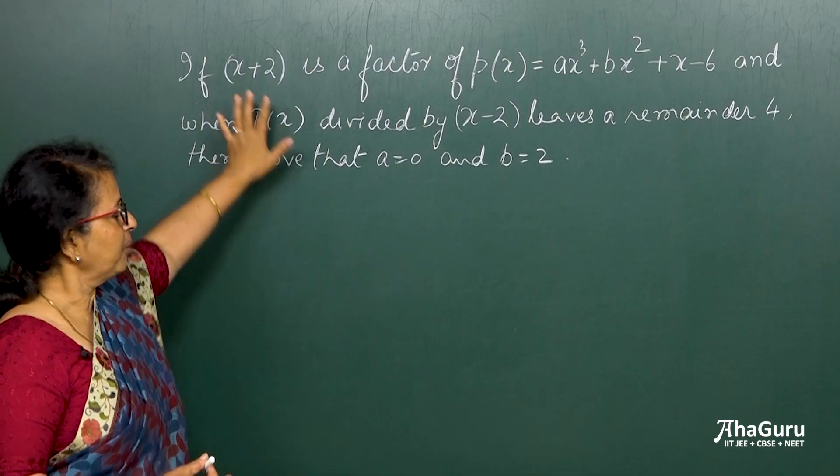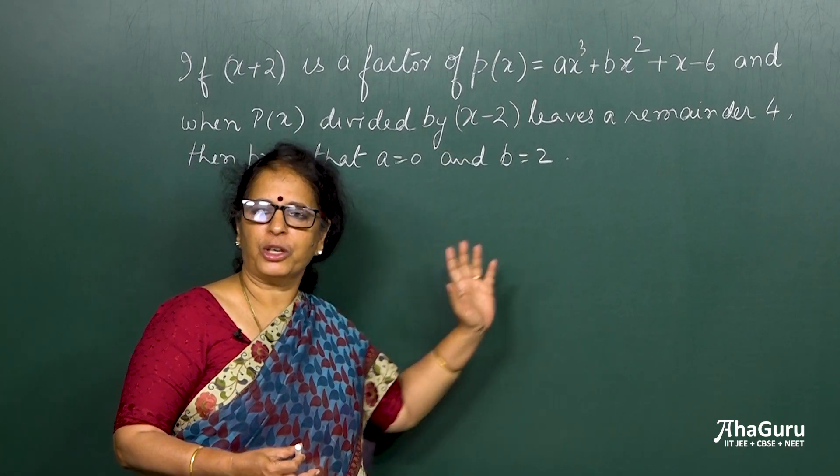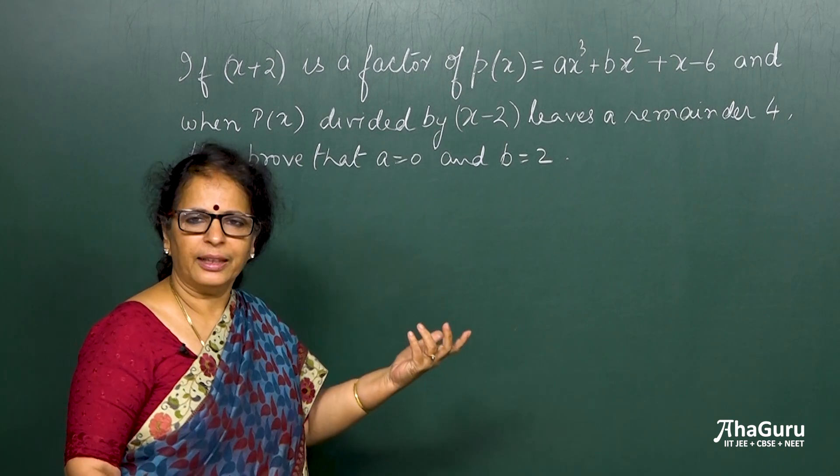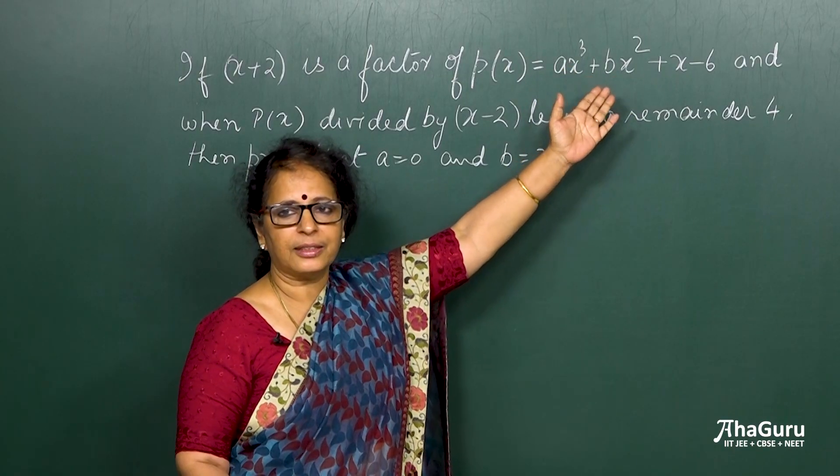So for this I will use the factor theorem. For this I will use the remainder theorem and I will equate both of them. So I will get a set of simultaneous linear equations and with that I can easily find the value of a and b.